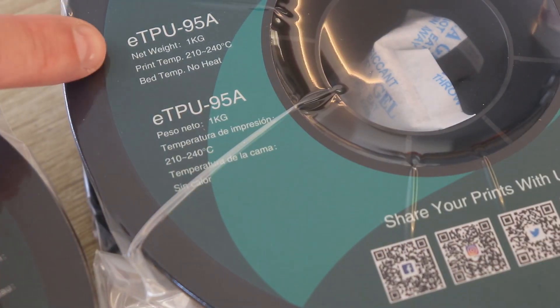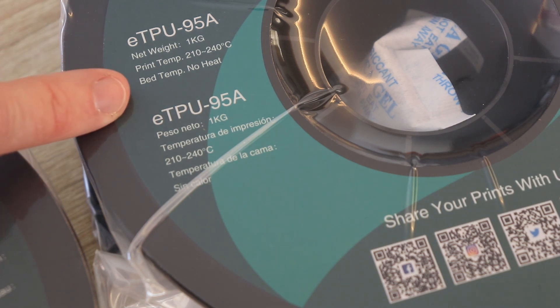This is regular TPU with the same hardness, 95 on Shore A scale, printing temperature between 210 and 240 degrees Celsius and bed temperature no heat.